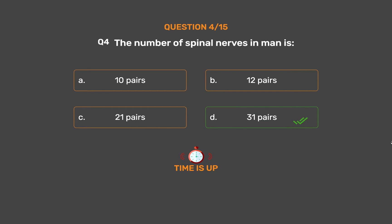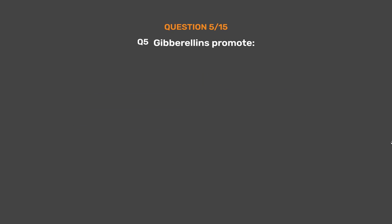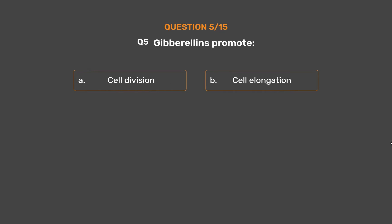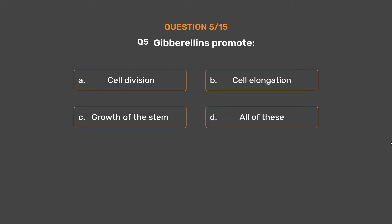Question No. 5. Gibberellins promote: Option A - Cell division. Option B - Cell elongation. Option C - Growth of the stem. Option D - All of these.